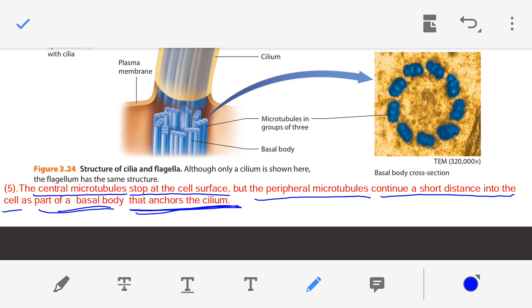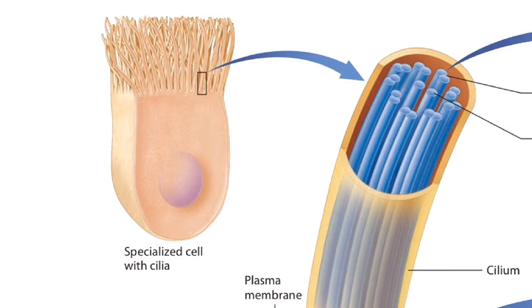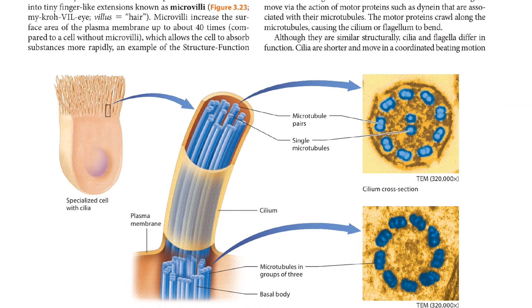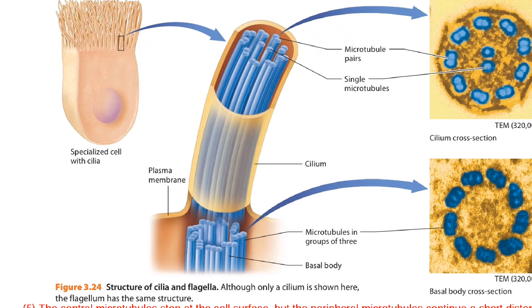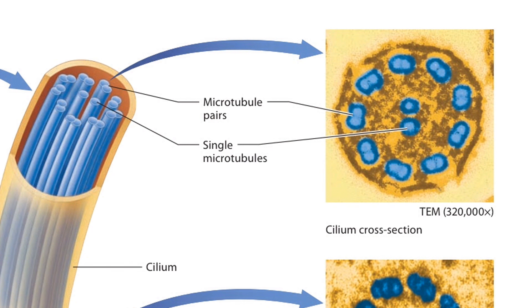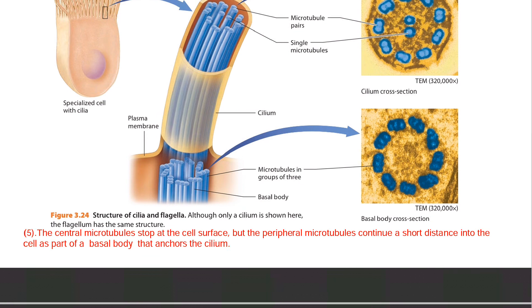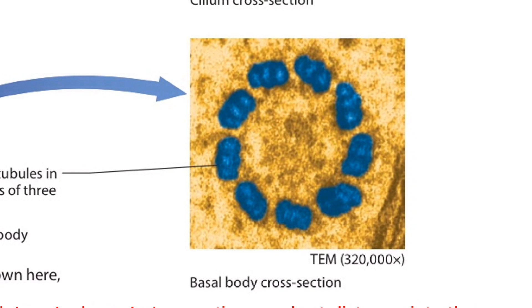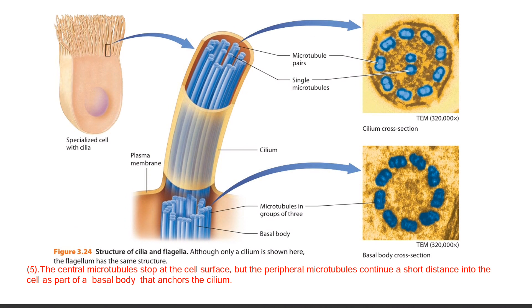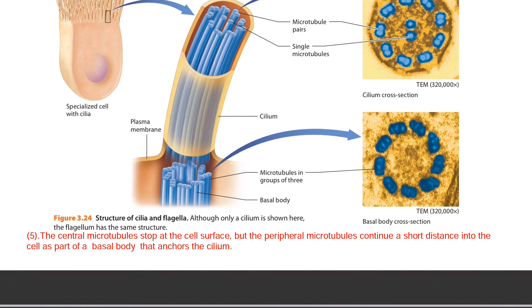Here in this figure is a specialized cell with cilia showing the structure of cilia and flagella. In the cross-section of the axoneme, in the center one pair of microtubules is present surrounded by nine pairs — this is the cross-section of the axoneme. In the cross-section of the basal body, the central microtubule pair is missing. This is the key difference between the axoneme and the basal body. The basal body consists of microtubules present inside the cell that anchor the cilium.